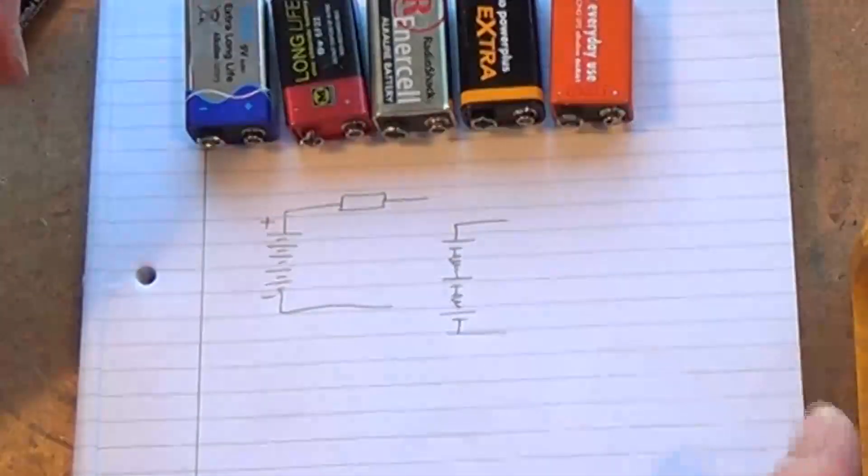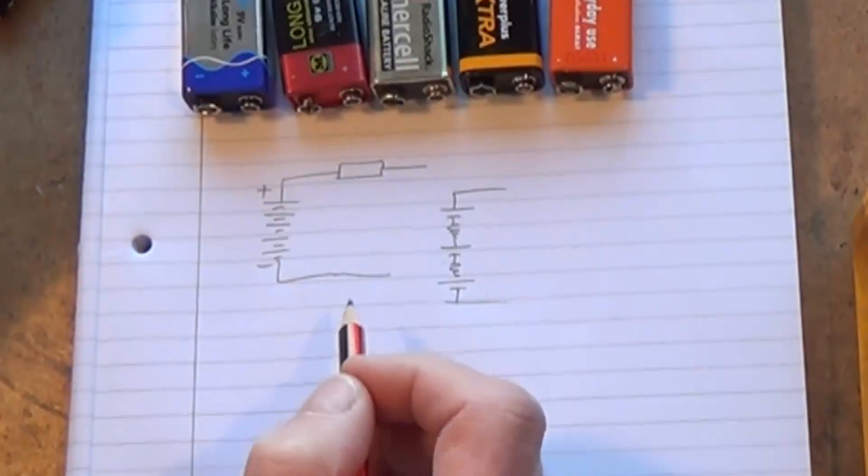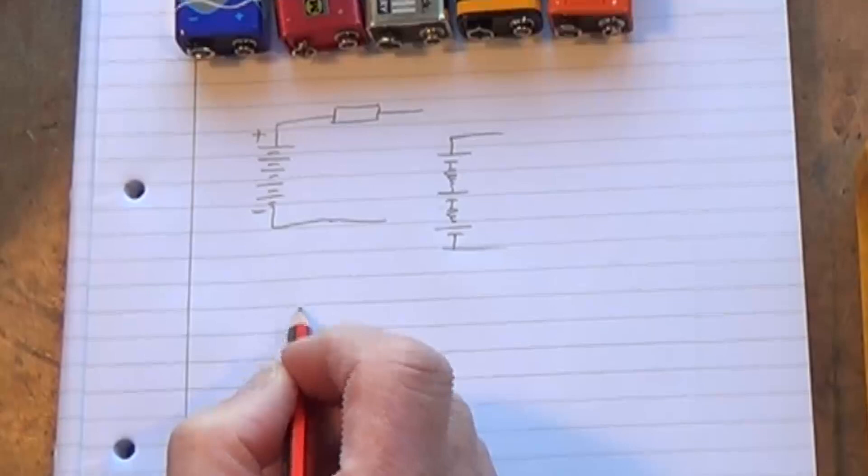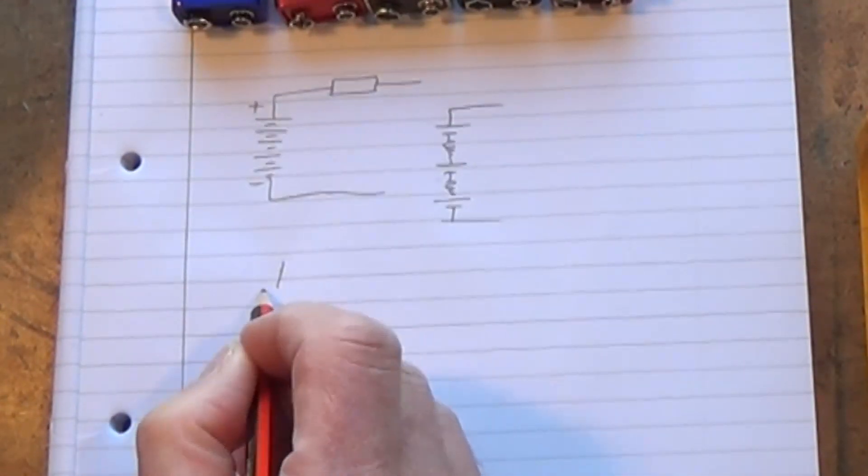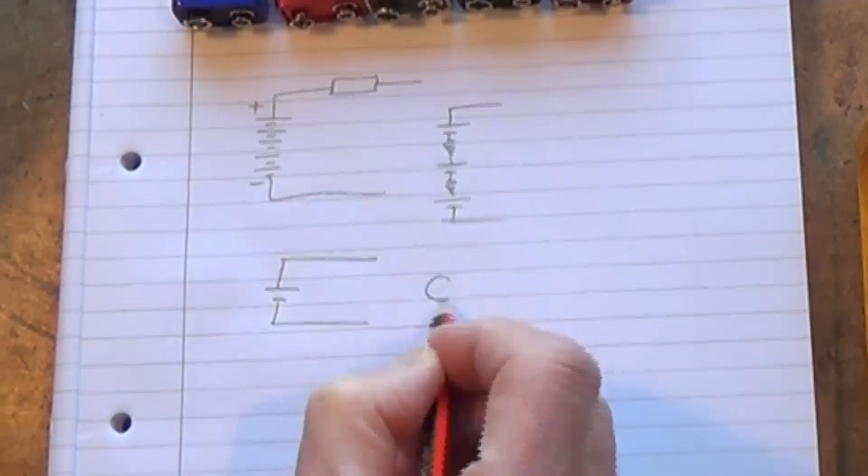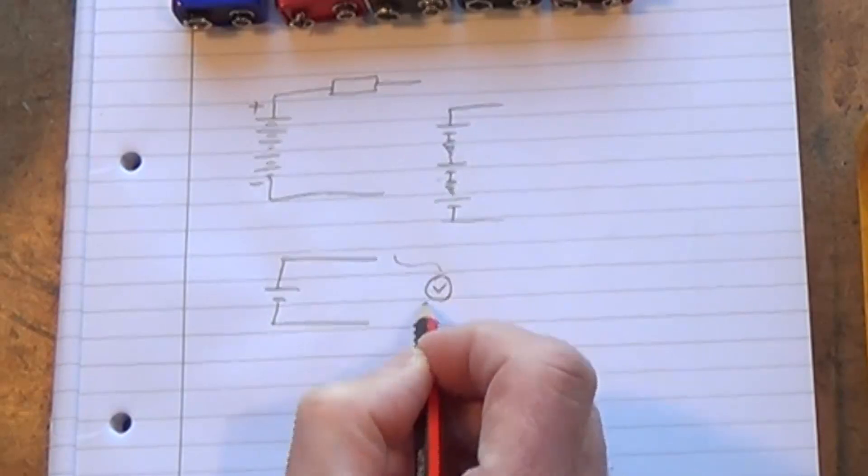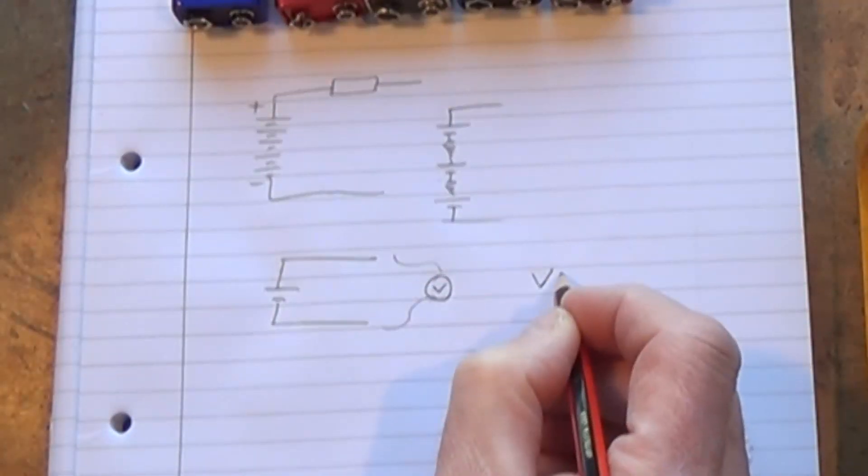So you can't just put a meter across the battery and measure the resistance, but you can make a comparison. What we can do is we can take the battery and put the voltmeter across it and measure its open circuit voltage and we call that V1.